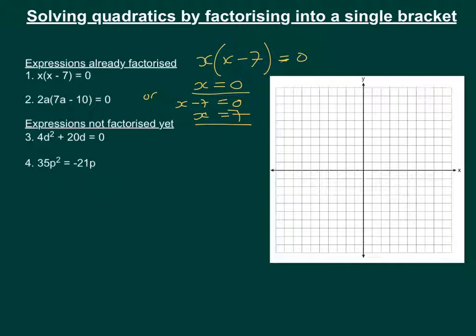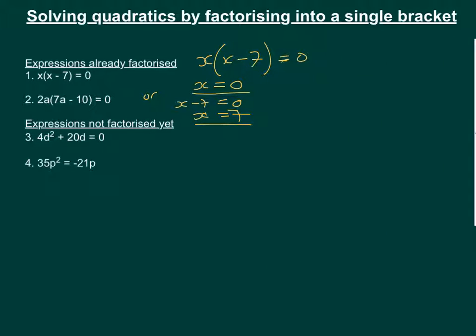Let's do the same with the second one. We're not going to apply it to the graph. In fact, I'm going to take that away. But if we look at the second one, we've got 2a outside of (7a minus 10) and that equals 0. So again, either this equals 0 or this bracket equals 0. So we've got either 2a equals 0 or (7a minus 10) equals 0.